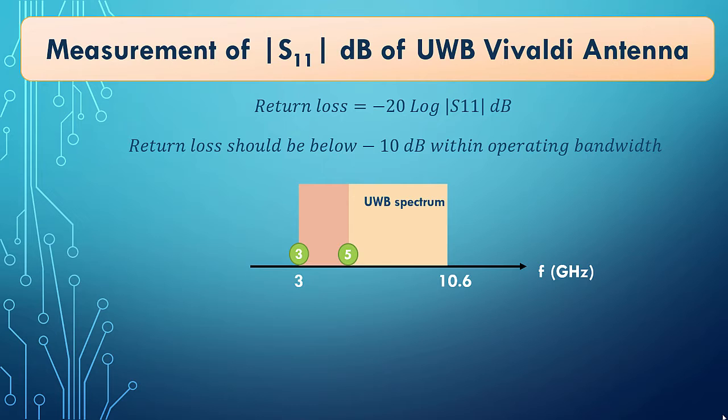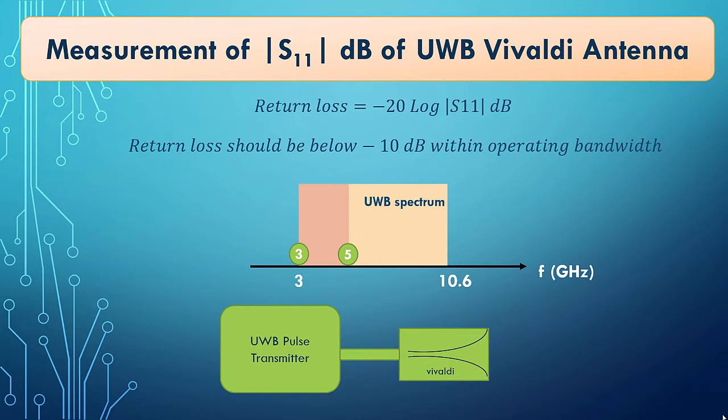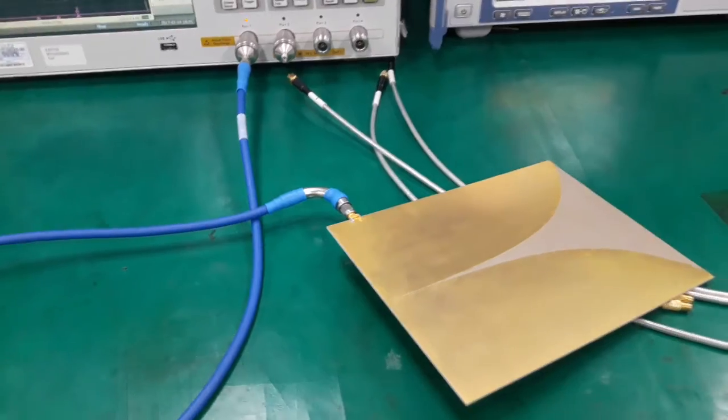Alright. Now, basically, this antenna is a part of UWB radar system. And what it does, the UWB pulse transmitter generates UWB pulse and the Vivaldi converts this electrical signal into electromagnetic wave that propagates in free space and detects the target object. Okay. So let's do the measurement of Vivaldi and check whether the return loss is adequate within this 3 to 5 GHz of bandwidth.